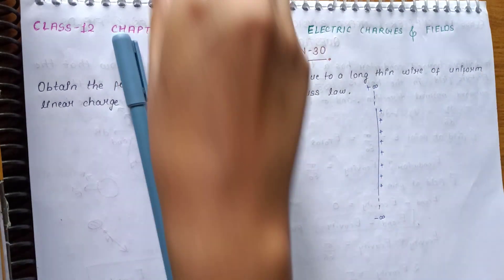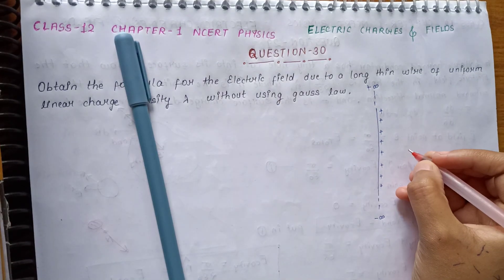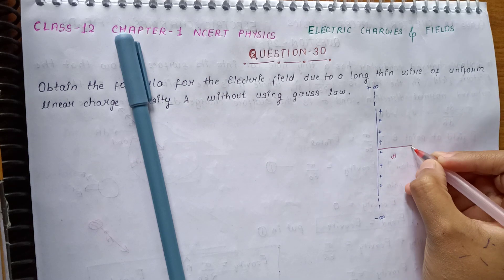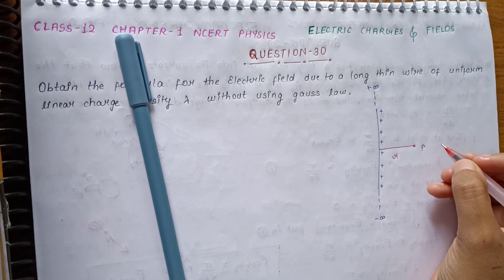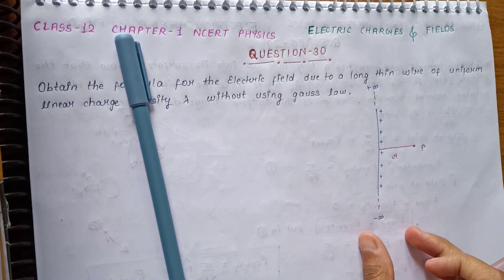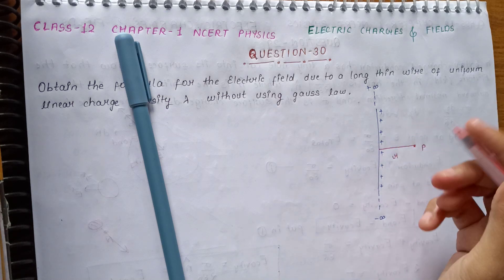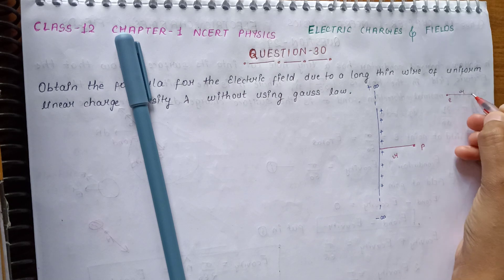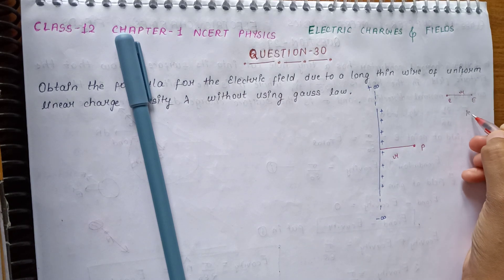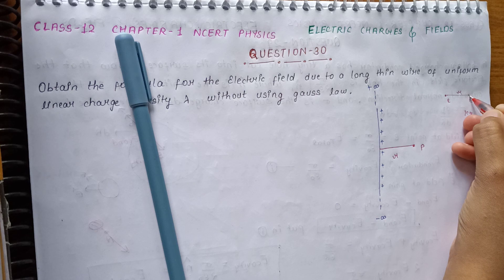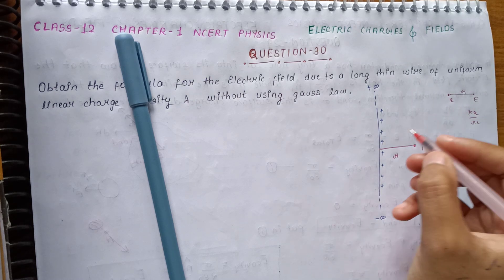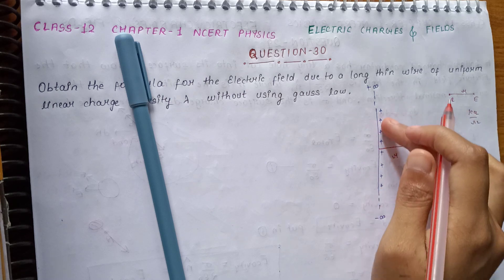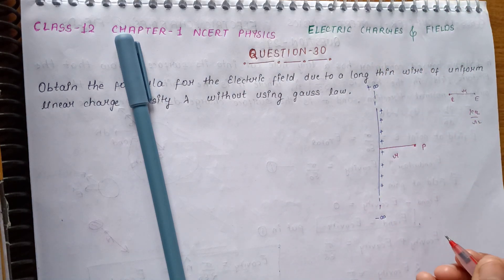So we have the electric field to find. Let us consider we have a distance r from the wire to point P, where we need to find the electric field. This is the whole charged wire. The electric field has contributions from all parts of the wire, so we use integration.